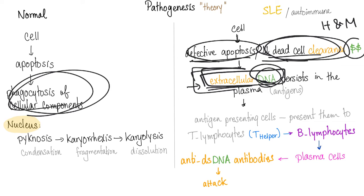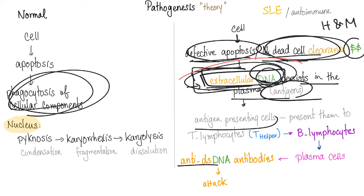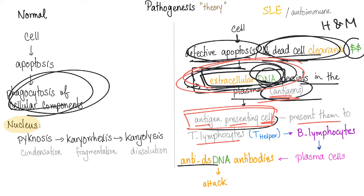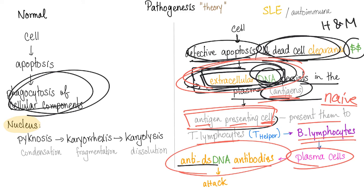If DNA is in the plasma, your body considers it foreign and will form autoantibodies against these antigens — called anti-double-stranded DNA because DNA is showing up in the serum. Antigen-presenting cells present the antigen to T-helper lymphocytes, which activate B-lymphocytes. They stop being naive and grow up into plasma cells, secreting these anti-double-stranded DNA autoantibodies.